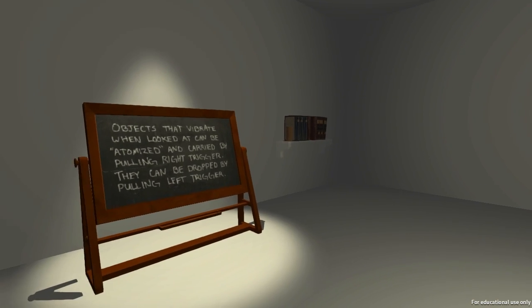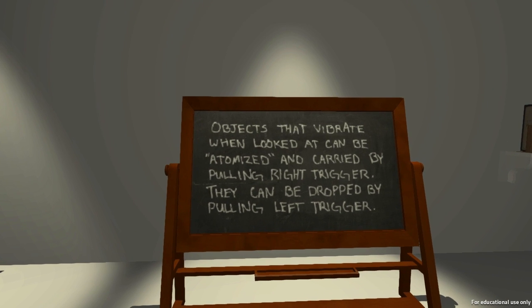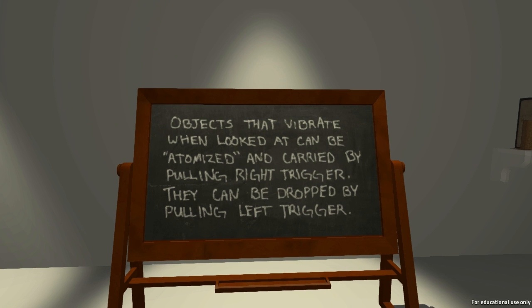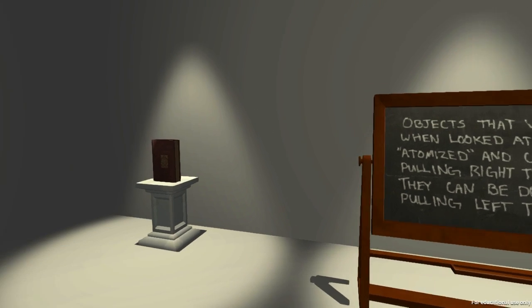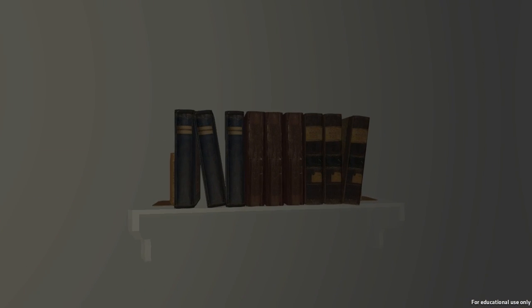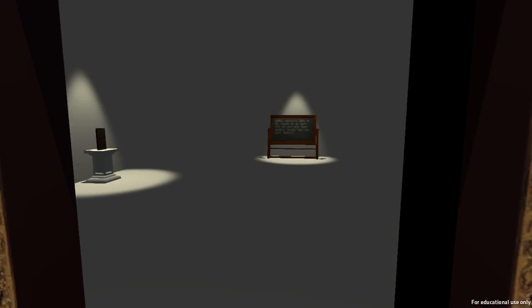As you can see, things look fairly benign here, but this is just our tutorialization area. Objects that vibrate when looked at can be atomized and carried by pulling the right trigger. They can be drawn by pulling the left trigger. So we're going to grab this book — you can see it atomizes and appears in my hands — and then we'll take it over here. The blackboard seems to be wiped off, and behind us we've got a door to the next area.